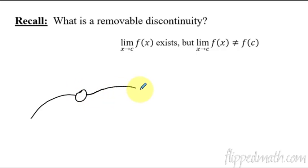So let's say we have what's called a removable discontinuity. And remember, what is a removable discontinuity? It's just a hole. That's all we're talking about here. A hole.